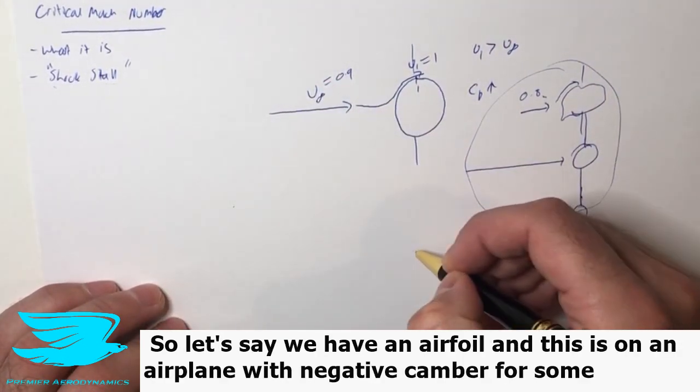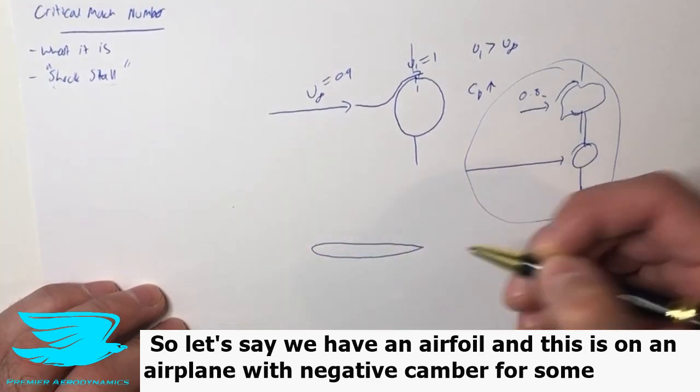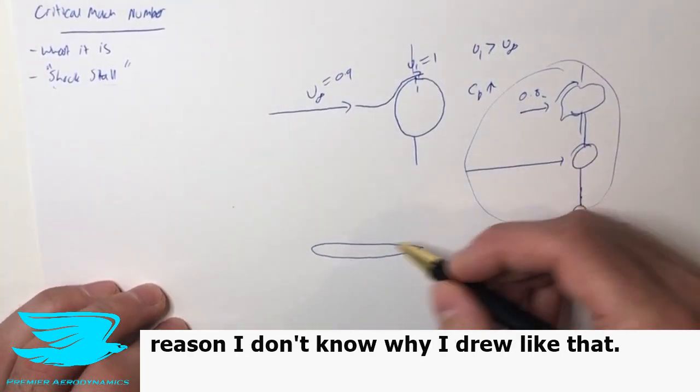So let's say we have an airfoil, and this is on an airplane. It's negative the camera for some reason, I know, I just drew it like that.